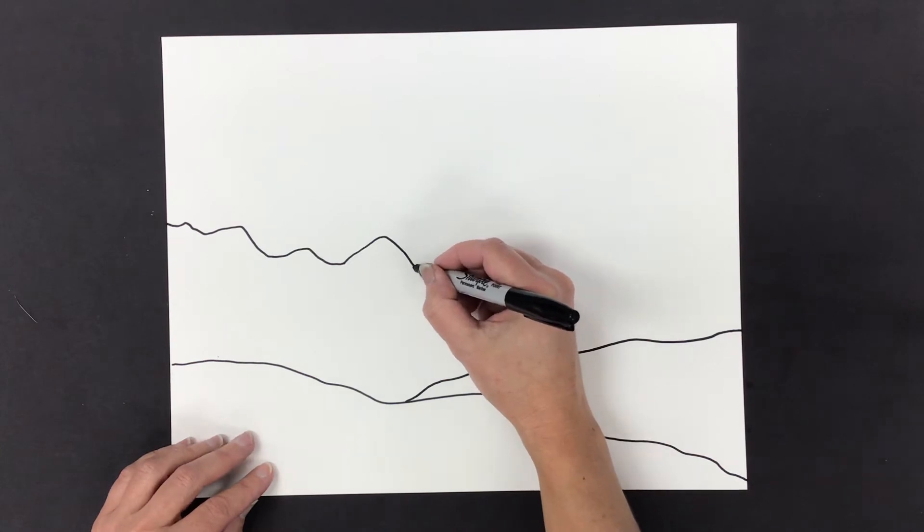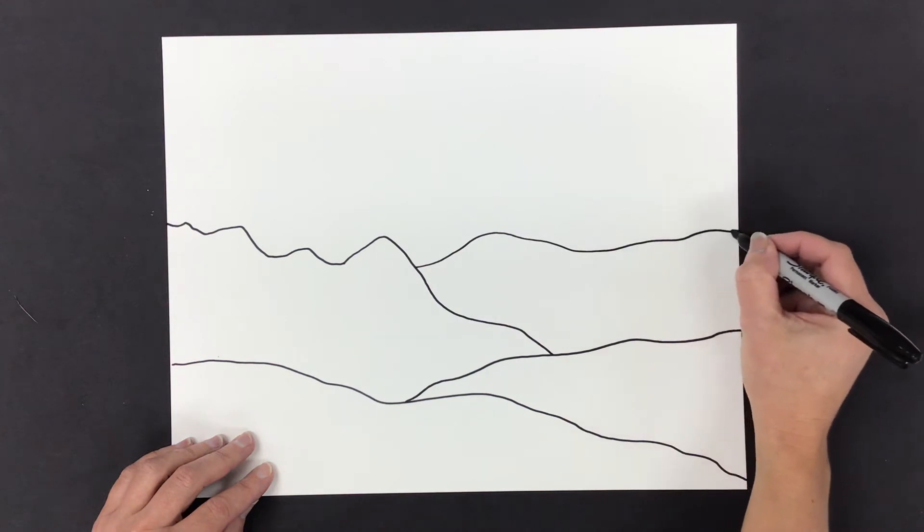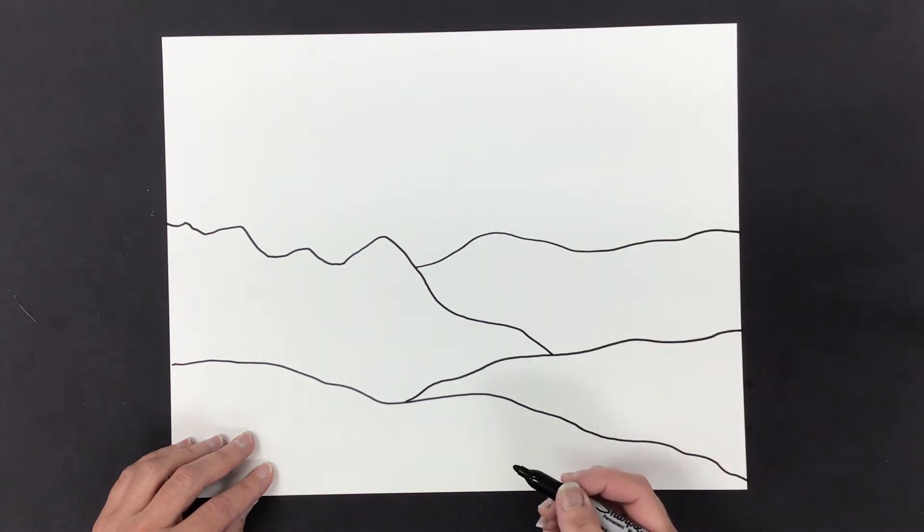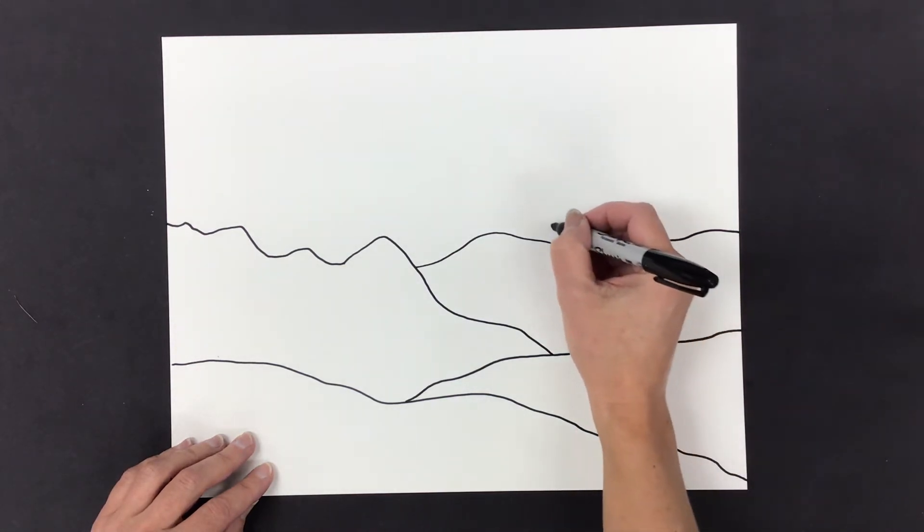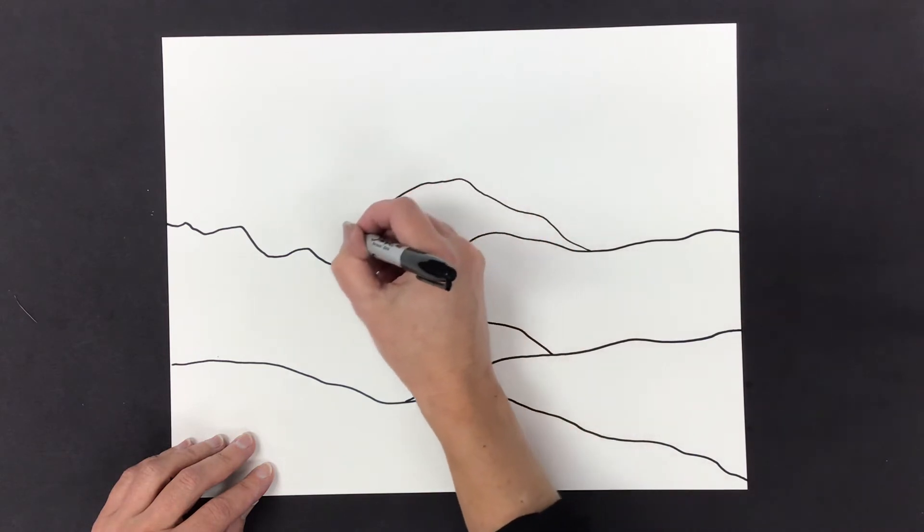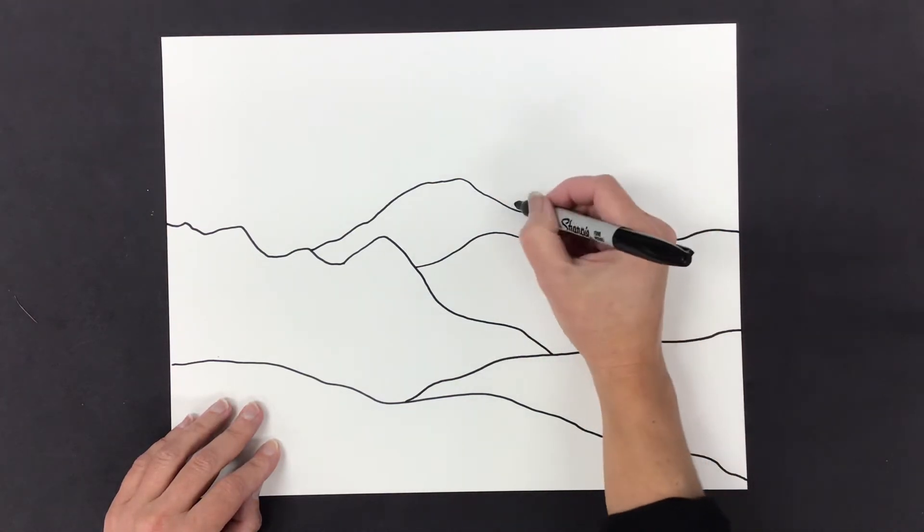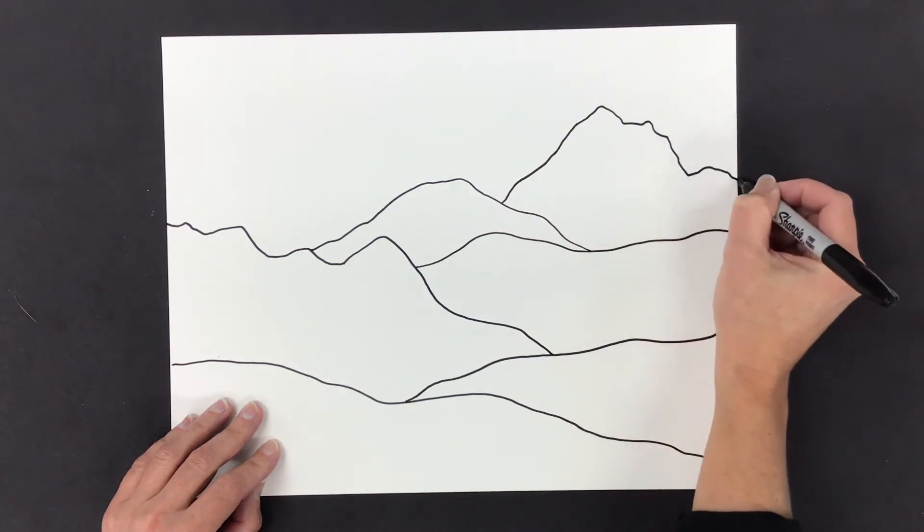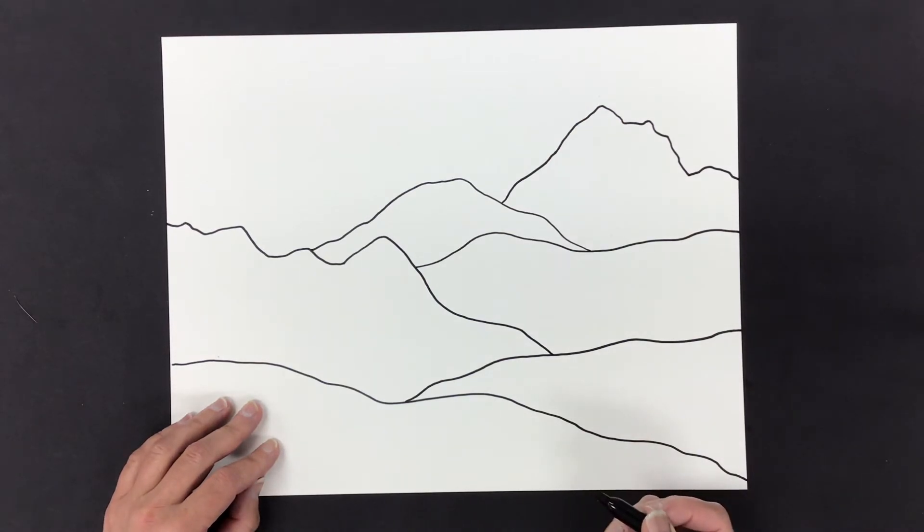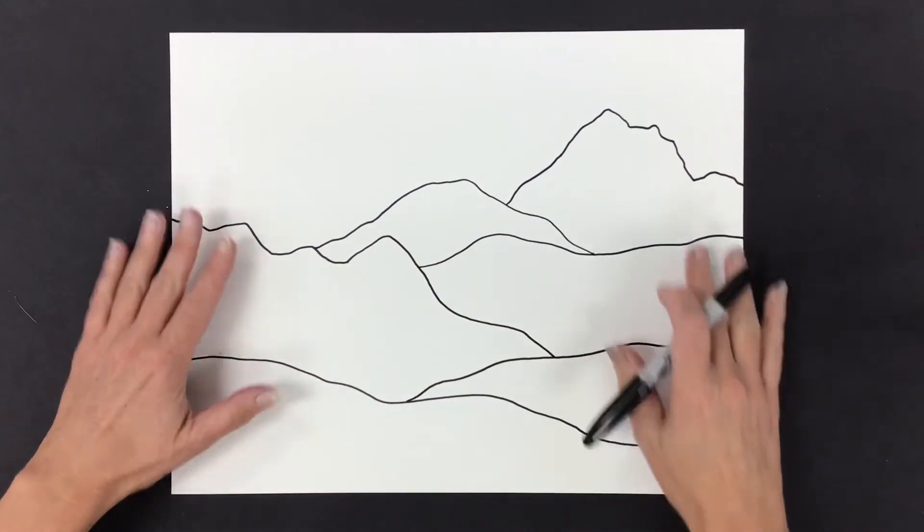Then I'm going to use that same back and forth across idea and I go across make another part of my mountain. Here I'm going to include a small hill and over here I'm going to make more of a mountain and there we go. Let's take a look. We have our foreground, our middle ground and our background.